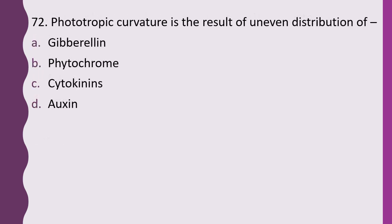Question 72. Phototropic curvature is the result of uneven distribution of: gibberellin, phytochrome, cytokinin, or auxin. The correct answer is auxin.